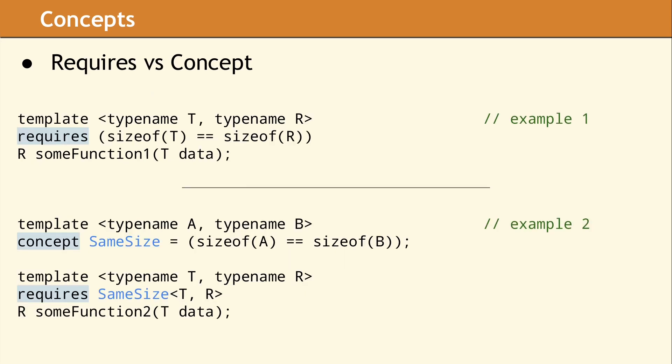In our first example, we have added a constraint to the template function. This constraint requires the amount of memory used for an object of type T to be the same as for an object of type R. This is a restriction which can be checked at compile time. If some function is called with types which fail to satisfy the constraint, the call will not compile.